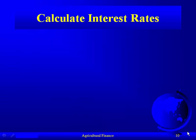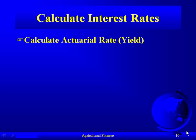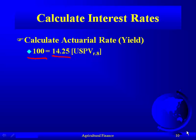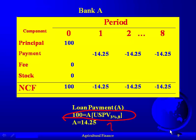With this information, we calculate the interest rates — specifically the actuarial rate, which is the yield. The IRR is the rate that makes the present value of cash inflows equal to the present value of cash outflows. The present value of cash inflows is $100 today. The present value of the cash outflows is the eight quarterly payments of $14.25. We're trying to find the rate that makes those equal, and the answer is 3%.